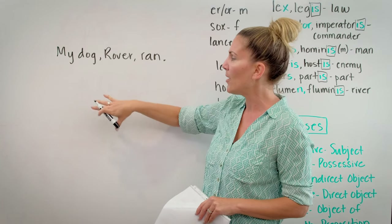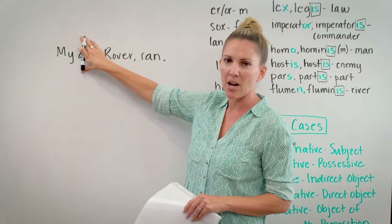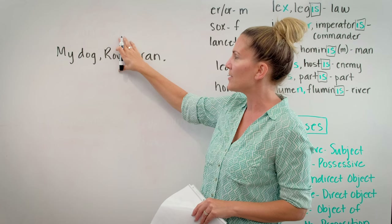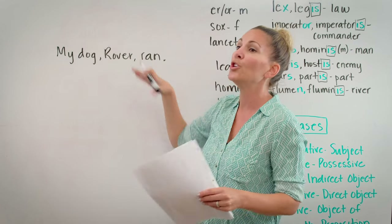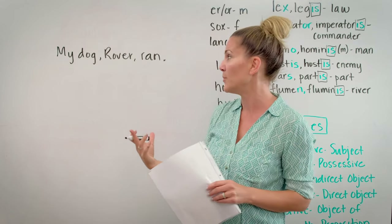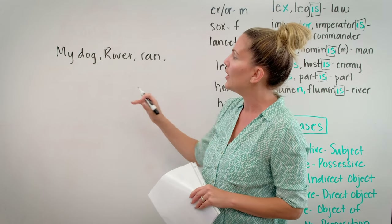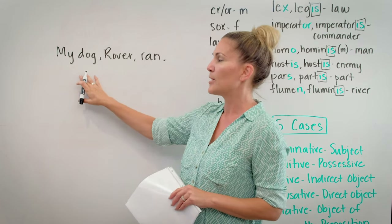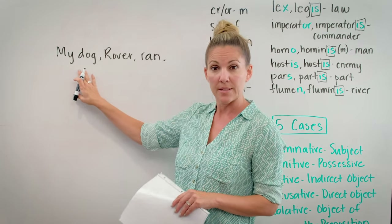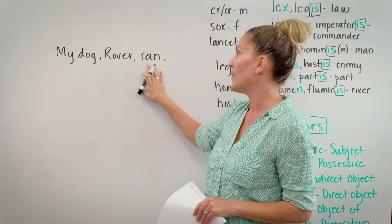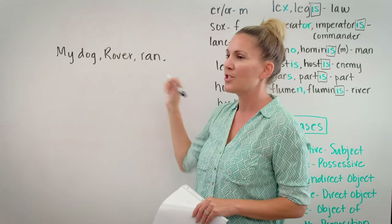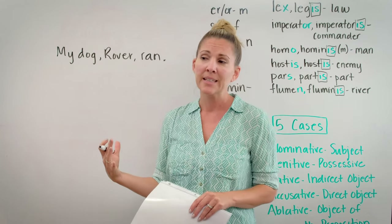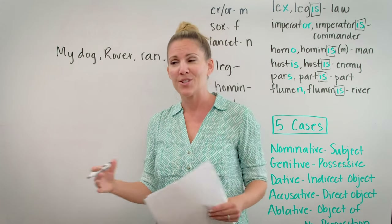For instance, in 'my dog Rover ran,' 'Rover' is an appositive because it's further identifying my dog. I can take 'Rover' out and the sentence remains intact: 'my dog ran.' However, I can't take 'dog' out — 'my Rover ran' doesn't make any sense. So 'Rover' could be removed and the sentence would still be grammatically correct, and that's how it differs from the subject. 'Dog' is the subject; the sentence is about my dog running, and 'Rover' is just telling you more about my dog.